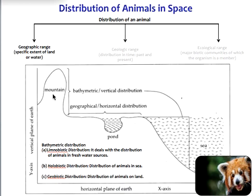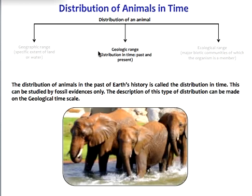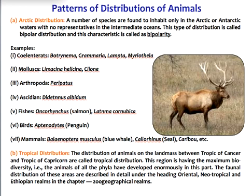Geobiotic distribution refers to the distribution of animals on land. Geologic range is the distribution of animals in the past of Earth's history. To study the geological range of an animal, you need to take the help of fossil evidences. The patterns of distribution of animals can be of four types.